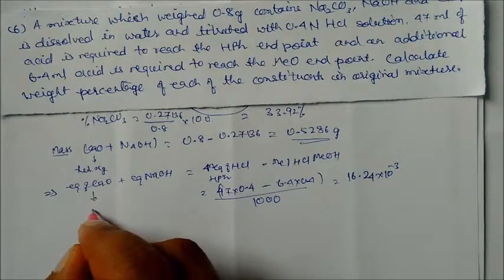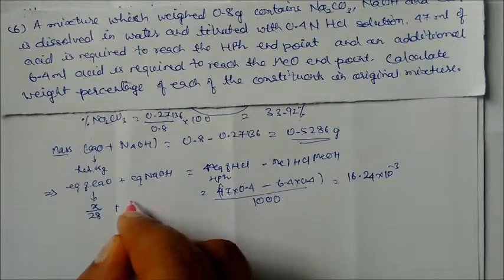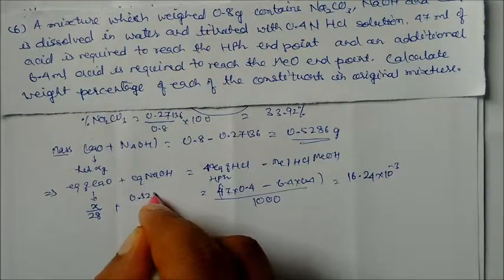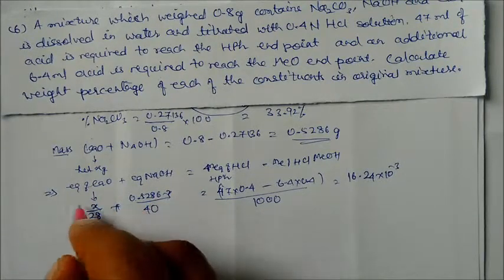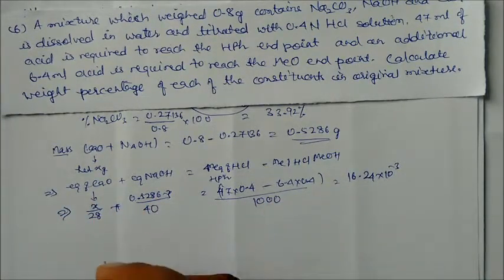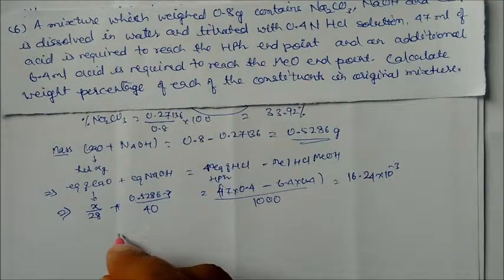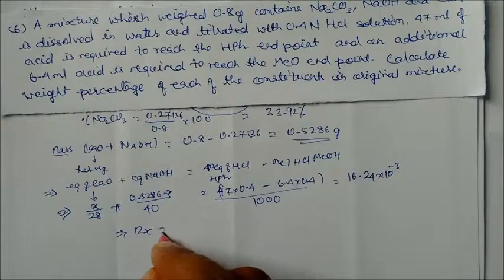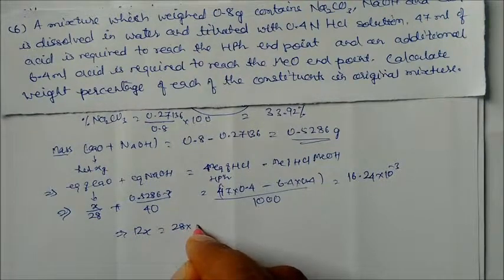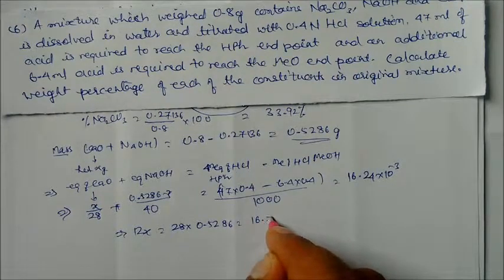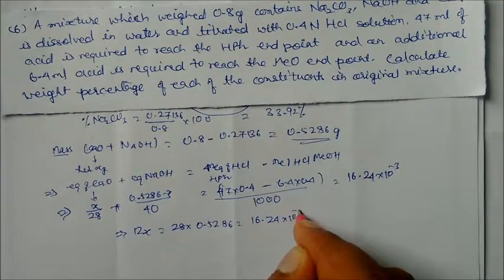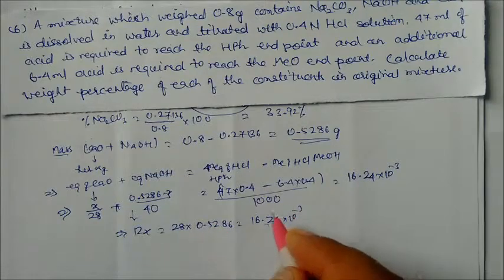Calcium oxide: x/28 equivalents (equivalent weight of CaO = 28). Sodium hydroxide: (0.5286 − x)/40 equivalents. Setting up the equation: x/28 + (0.5286 − x)/40 = 16.24 × 10⁻³.